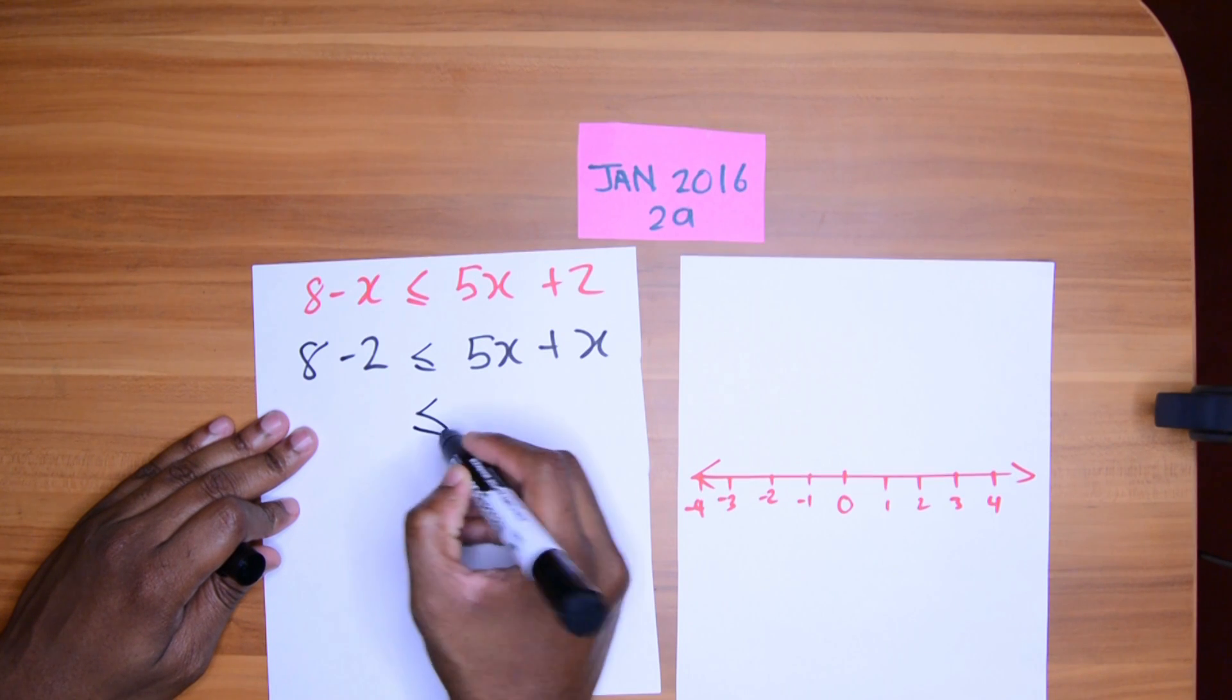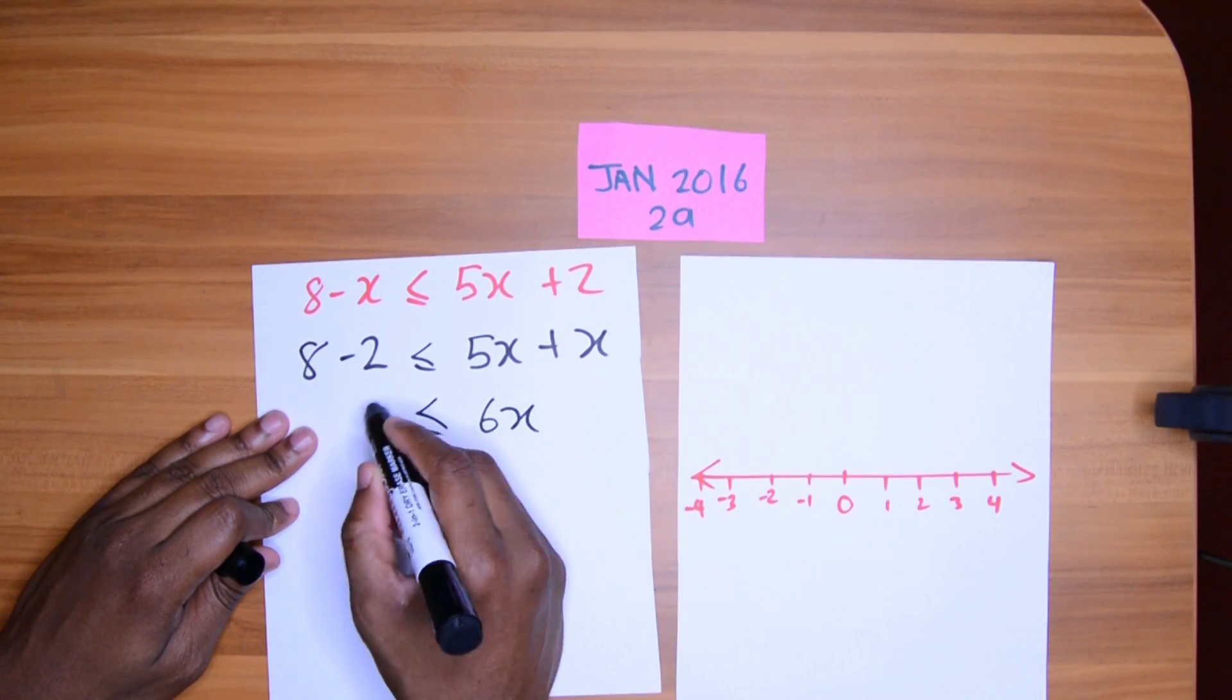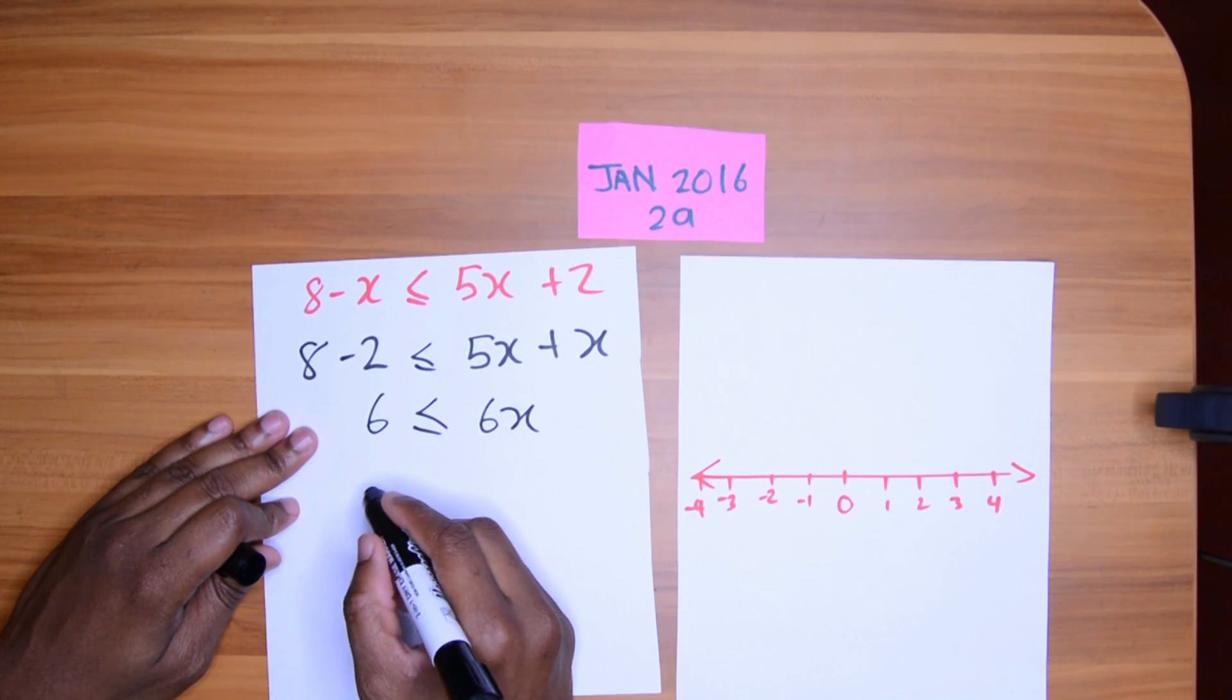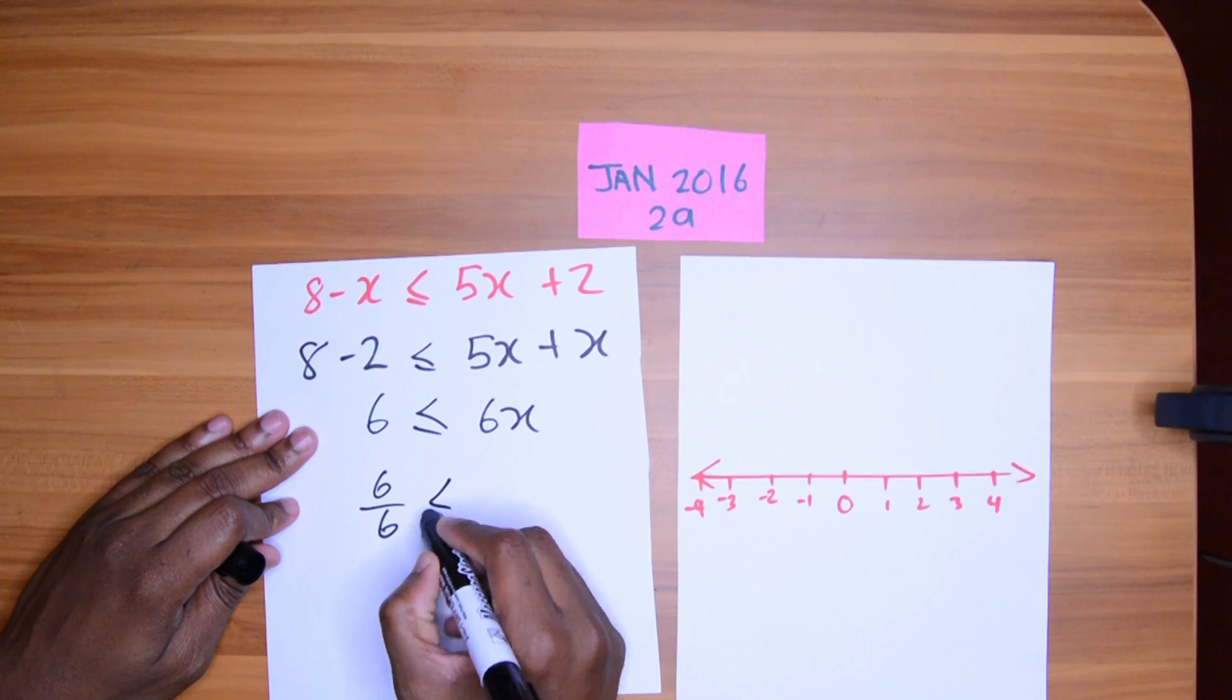Now because we didn't interfere with any negative numbers in terms of division or multiplication, we are just bringing across terms, right? The sign remains put. We can call that 6x and we can call that 6. Bring across the 6 now. We will get 6 over 6. That's the next.